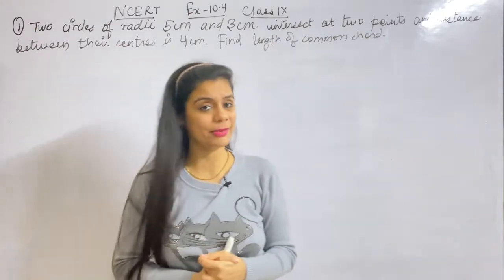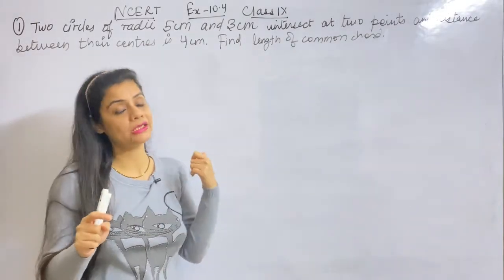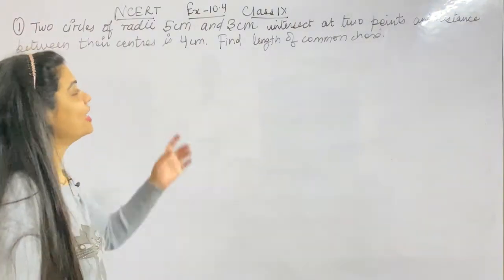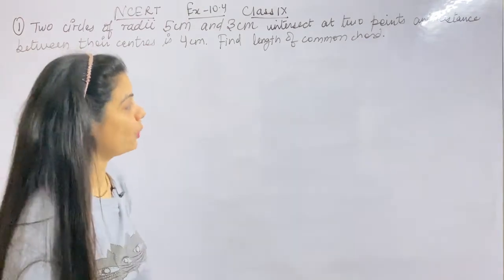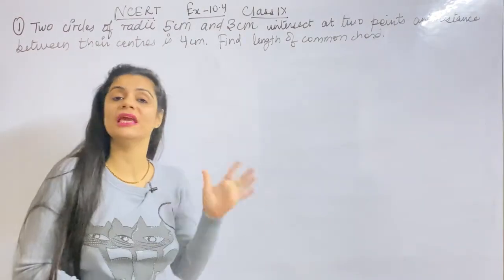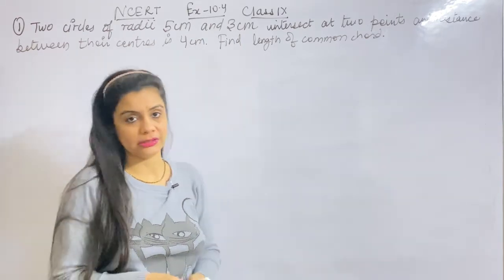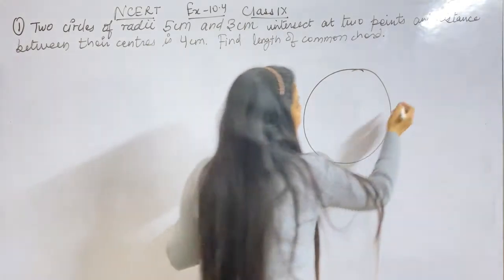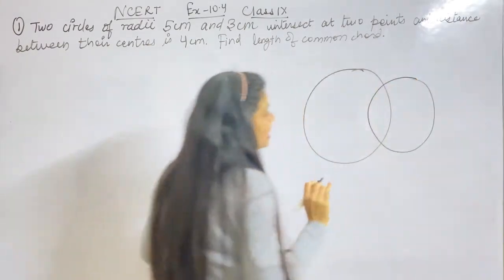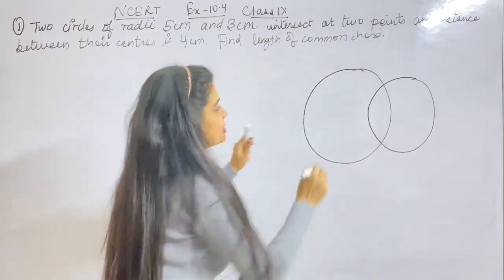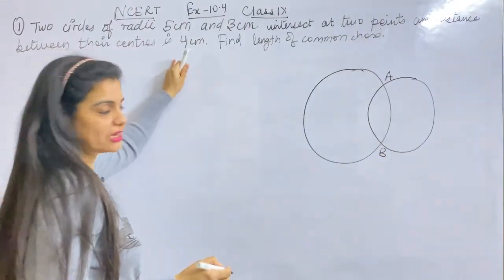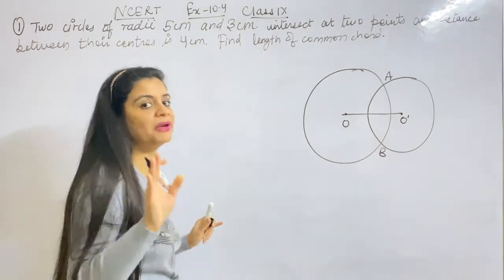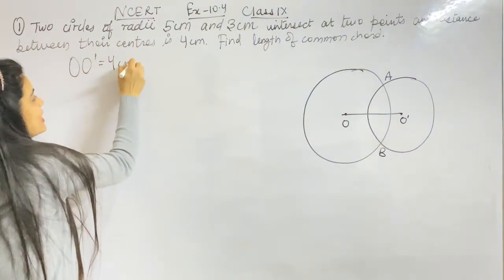So Exercise 10.4, first question: two circles of radii 5 cm and 3 cm intersect at two points. One big circle with 5 cm radius and one small circle with 3 cm radius. They intersect at two points A and B. The distance between their centers is 4 cm, so O O-dash is equal to 4 cm.